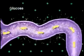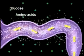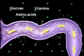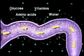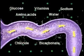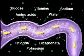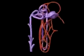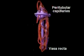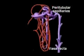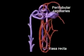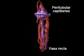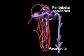These include glucose, amino acids, vitamins, water, sodium, chloride, bicarbonate and potassium. Blood vessels receiving reabsorbed species are peritubular capillaries, a plexus derived from the arteriole leaving the renal corpuscle.